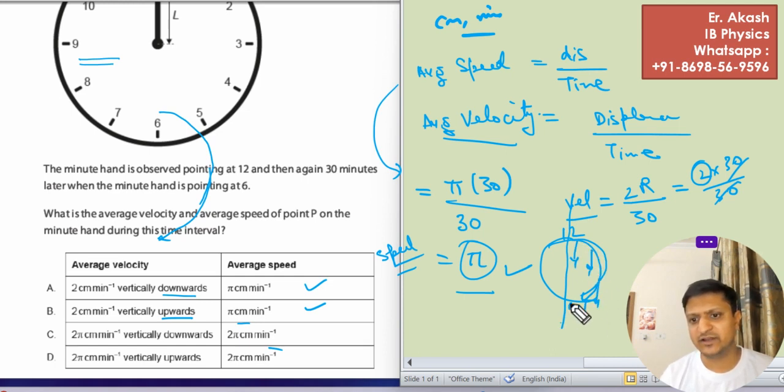So whenever the needle is moving from 12 to 6, the vertical direction is towards downwards. So the answer will be downwards.